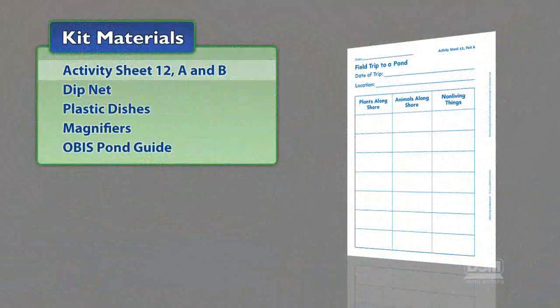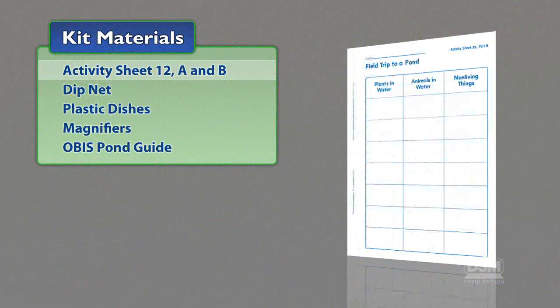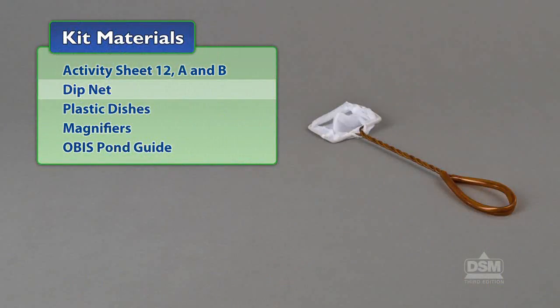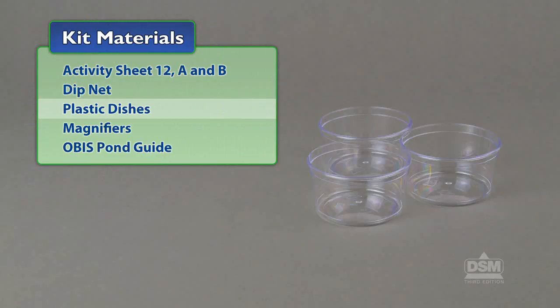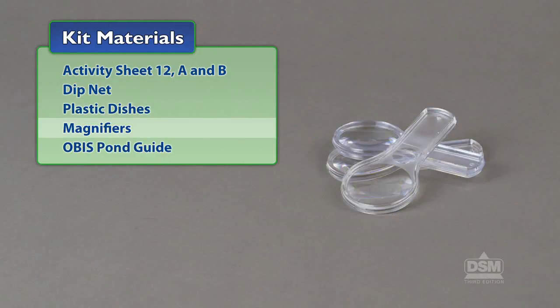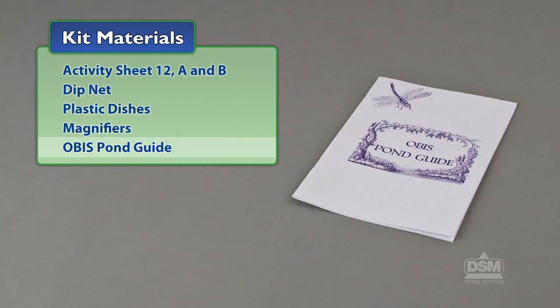You will need the following materials from the kit: Activity Sheet 12, Parts A and B, dip net, plastic dishes, magnifiers, and the OBIS Pond Guide.